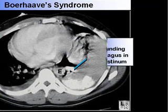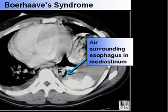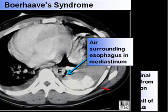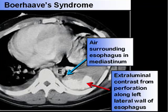In this CT scan of another patient, we can see air surrounding the esophagus in the mediastinum, and we can also see contrast which is extraluminal, due to the perforation that usually occurs along the posterior aspect of the left lateral wall of the esophagus.